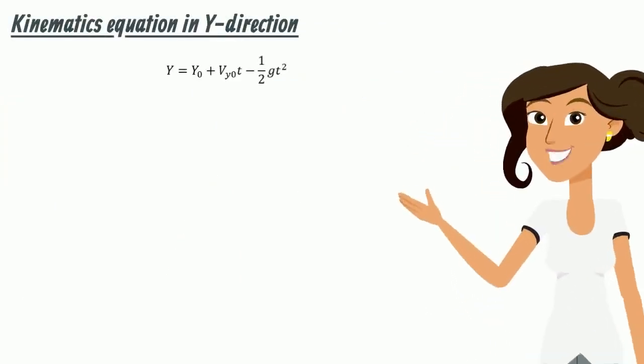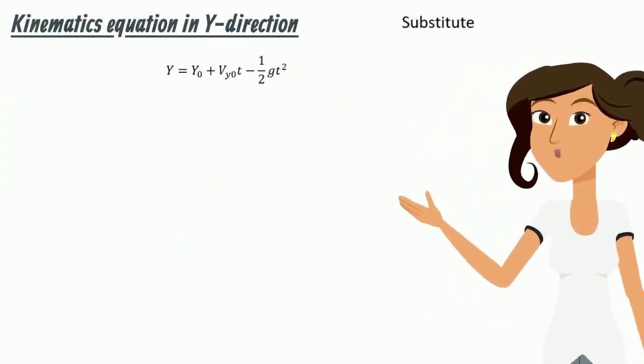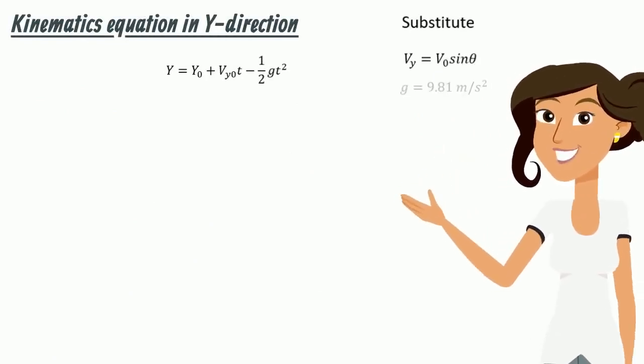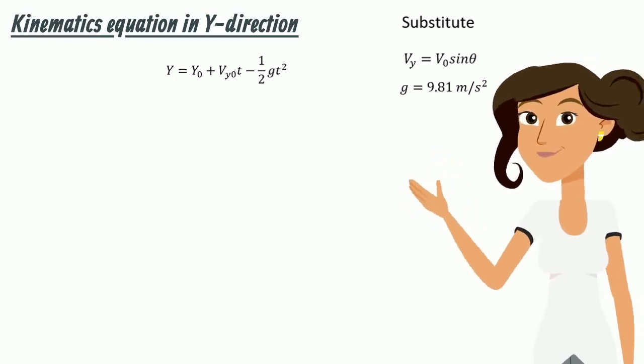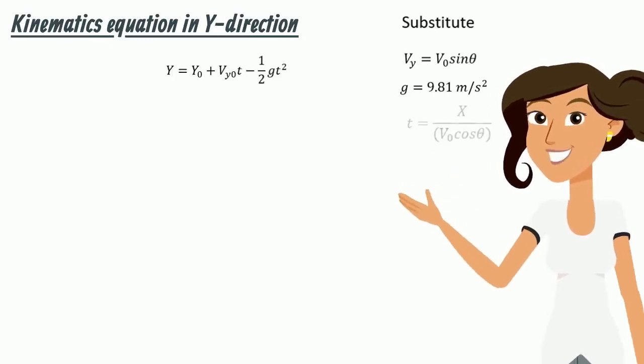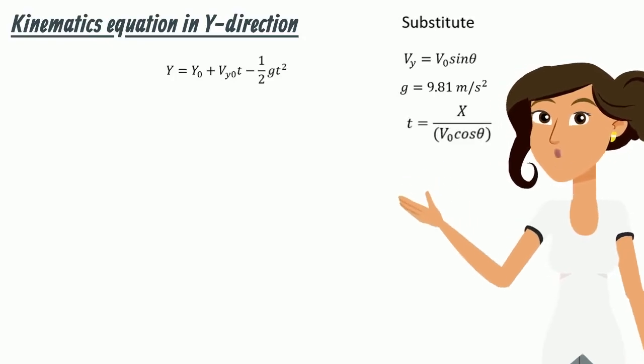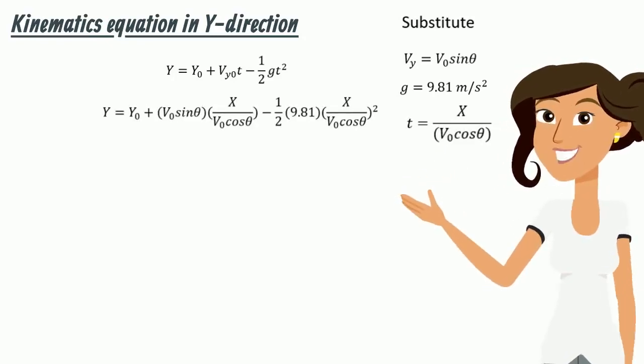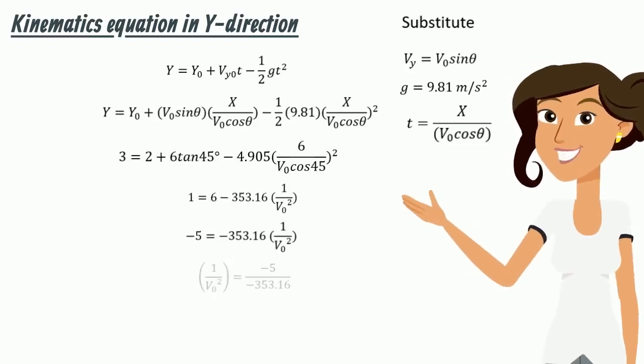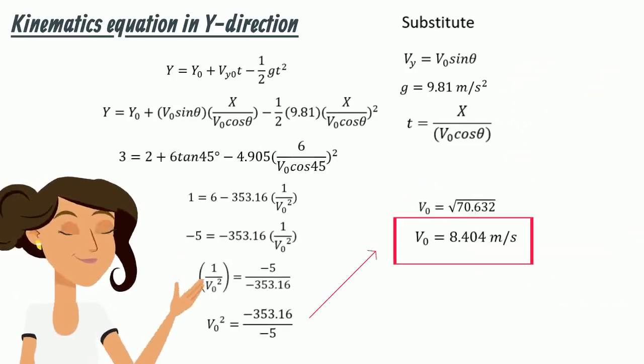Apply kinematic equation in y-direction involves time. Remember, in y-direction, vy equals v0 sin theta. Acceleration due to gravity is 9.81 m per second squared, and our finding, t equals x over v0 cos theta. Substitute all the values, and now we can easily solve the release velocity equals to 8.404 m per second.